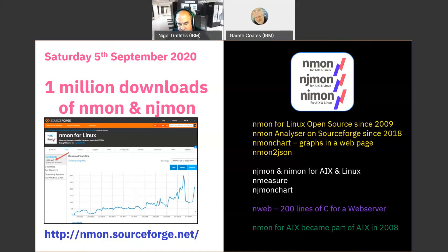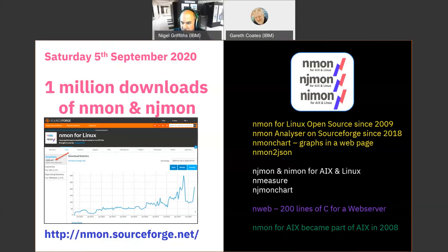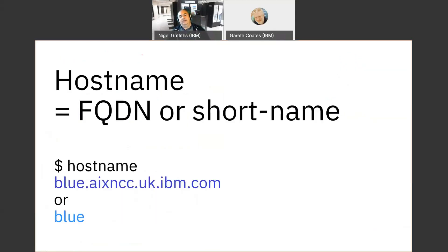We've also added nmeasure this past month — if you're collecting OS-level stats with njmon or nimon but have your own stats, like database transactions per second, nmeasure will put that data into the same database. We also have njmon chart, similar to the nmon chart, which generates an HTML file — a web page with all graphs embedded — and you can flick between 30 or 40 graphs by default. There's also nweb — 'n' stands for Nigel obviously — a nano website, a tiny 200-line C program that makes you a web server, with about 100 lines of code and 100 lines of debug, monitoring, and error reporting.